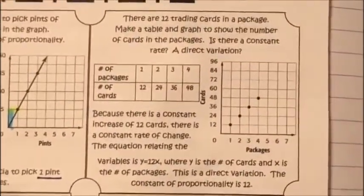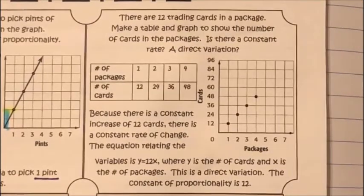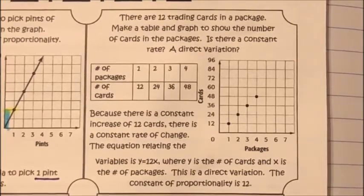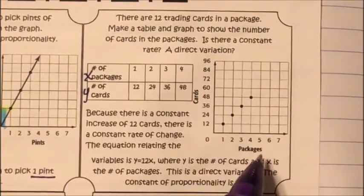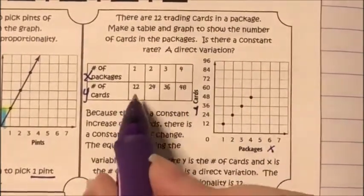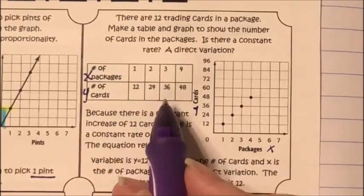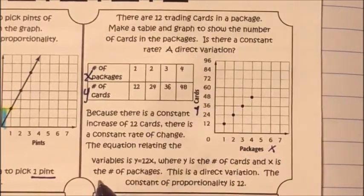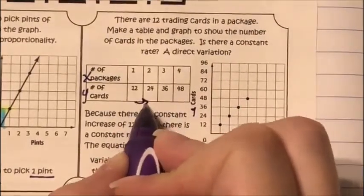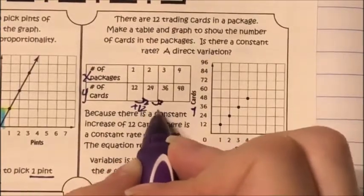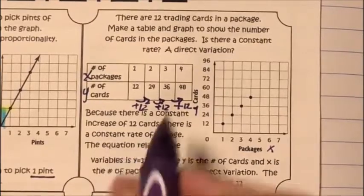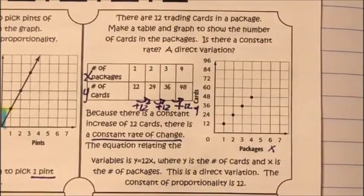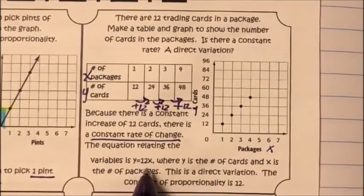Now let's look at the second problem. There are 12 trading cards in a package. Make a table and graph to show the number of cards in the packages — is there a direct variation? So the first entry is 12 cards to 1 package, 24 to 2, 36 to 3, 48 to 4. Every time the number of cards increases by 12. Because there's a constant increase of 12 cards, there's a constant rate of change. The equation relating the variables is y equals 12 times x.